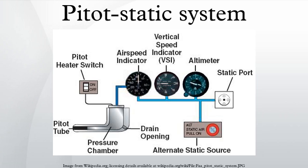Aircraft designed to operate at transonic or supersonic speeds will incorporate a Machmeter. The Machmeter is used to show the ratio of true airspeed in relation to the speed of sound. Most supersonic aircraft are limited as to the maximum Mach number they can fly, known as the Mach limit. The Mach number is displayed on a Machmeter as a decimal fraction.